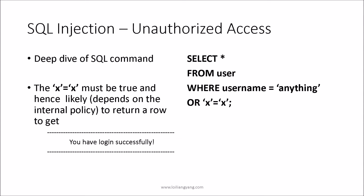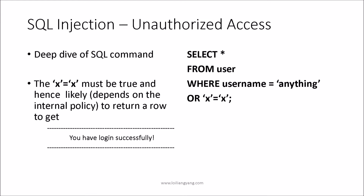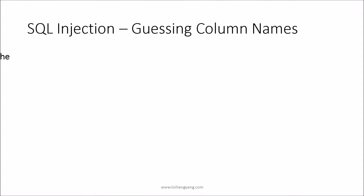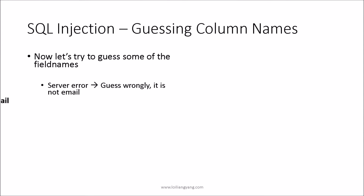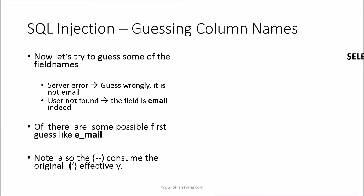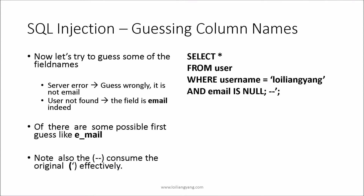Once the web application server receives a true result from the database, it will authenticate you into the system. We need to identify all the columns within the table we are inquiring on, as certain columns can provide very important information to gain confidential data. The database has two ways of responding: if the server returns an error, it means that a field like 'email' does not exist at all, and hence we will have to try another method.